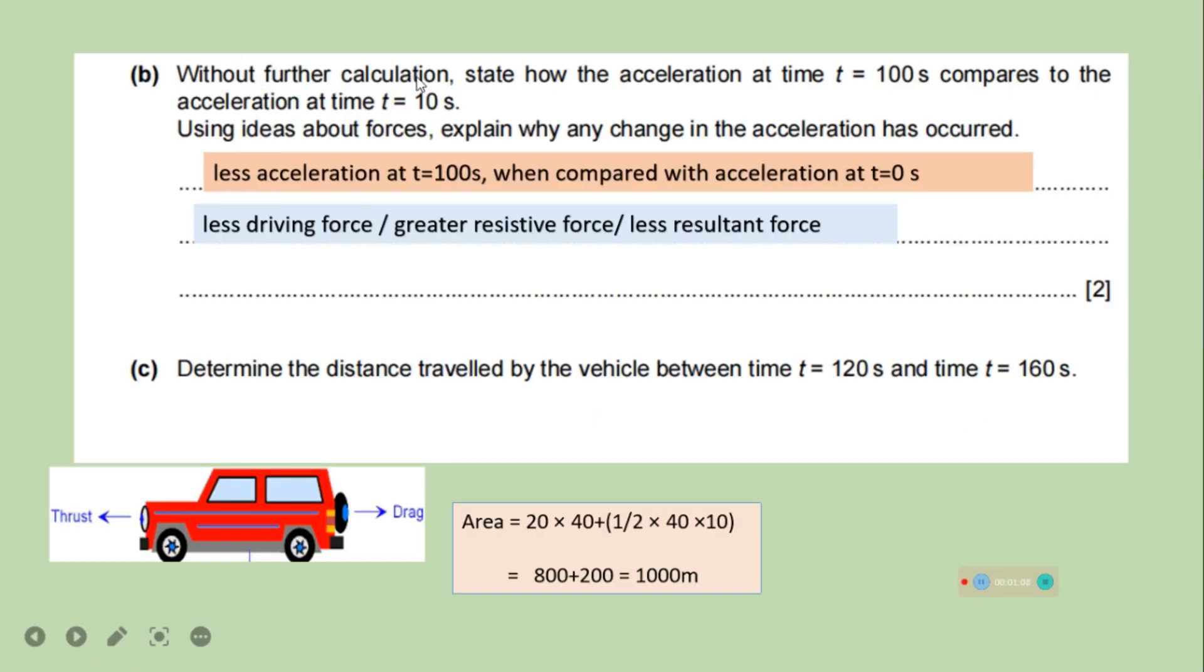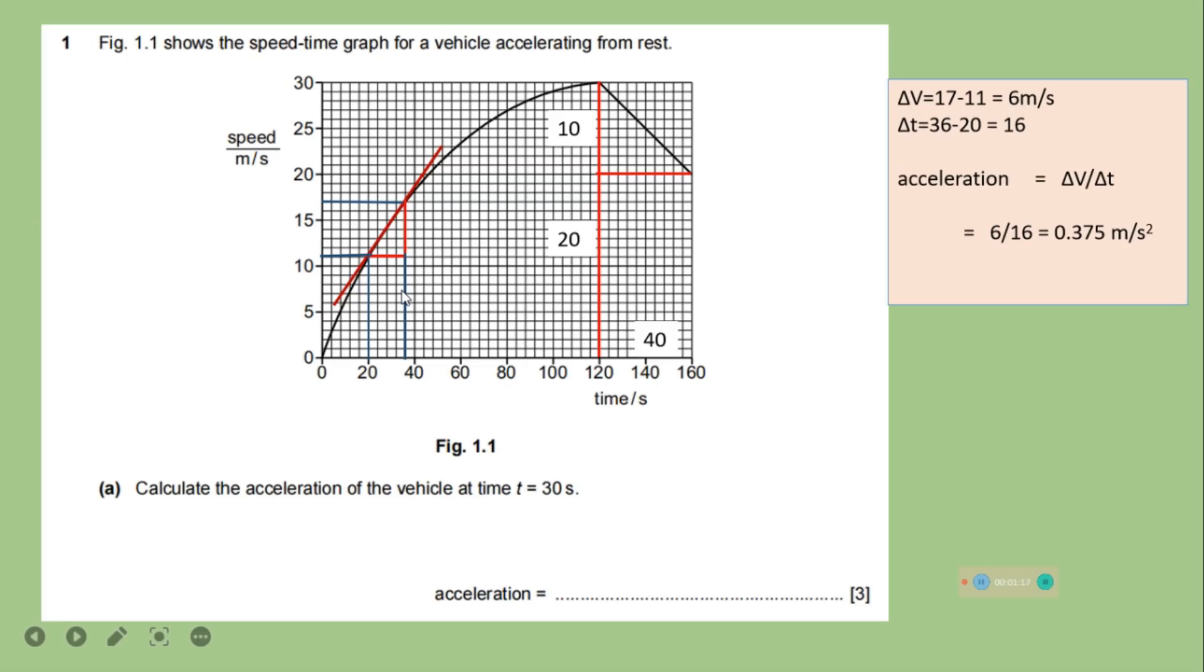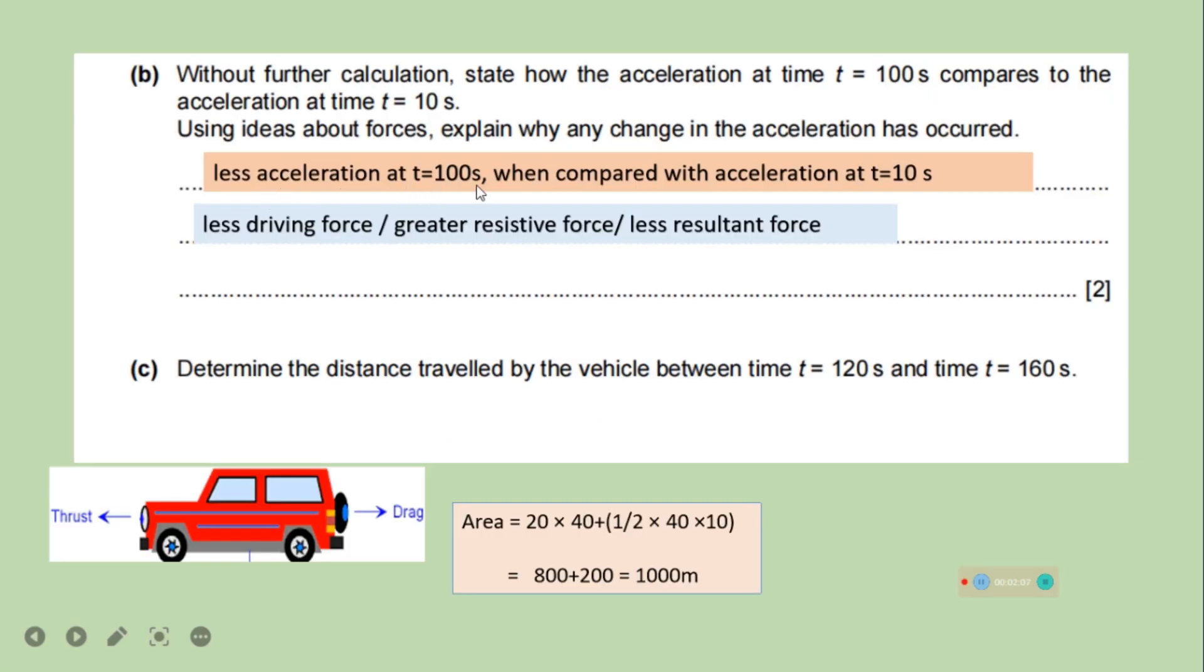Without further calculation, state how the acceleration at time t equals 100 seconds compares to the acceleration at time t equals 10 seconds. Well, we can see that the graph is more steeper at t equals 10 seconds as compared to when time is 100 seconds. And when the graph is more steeper, it represents the larger value of acceleration. So acceleration is decreasing, less acceleration at t equals 100 seconds when compared with acceleration at t equals 10 seconds.